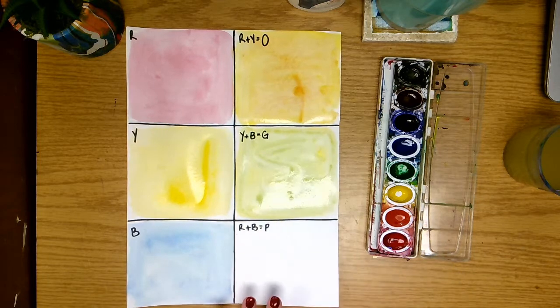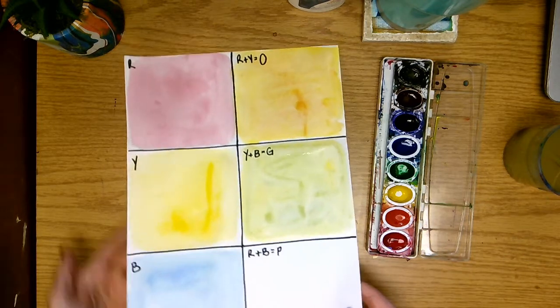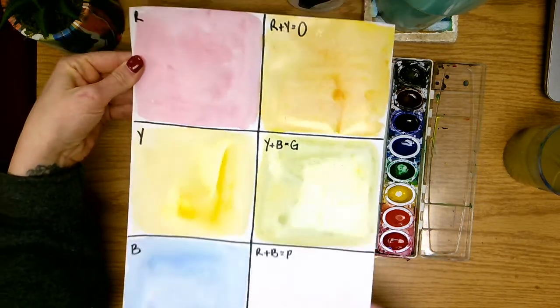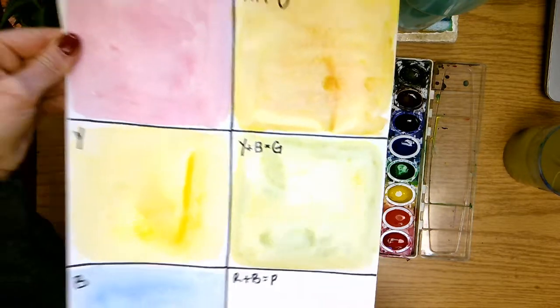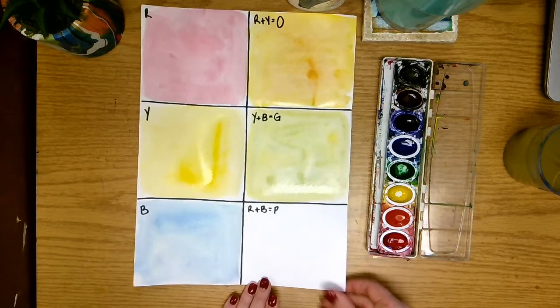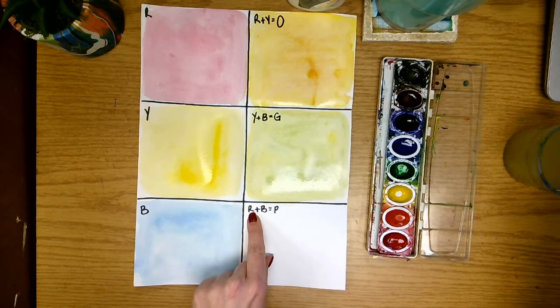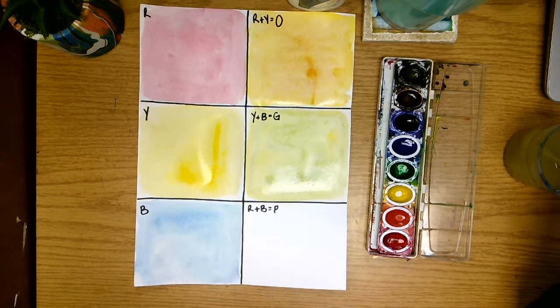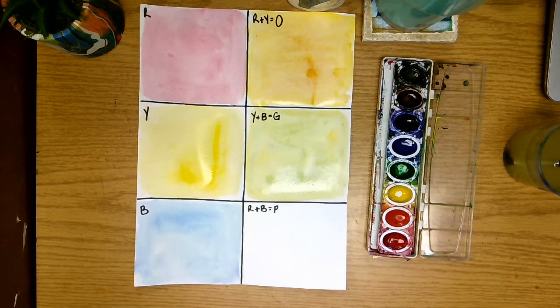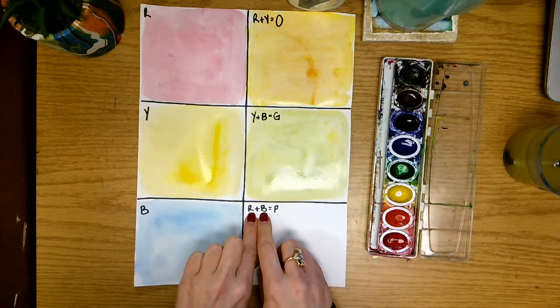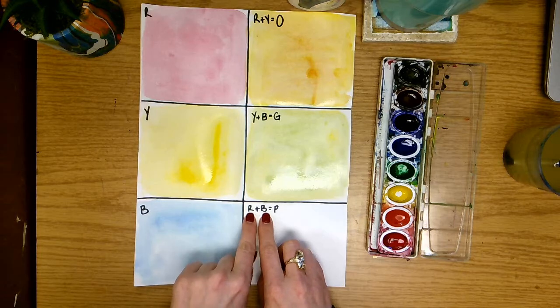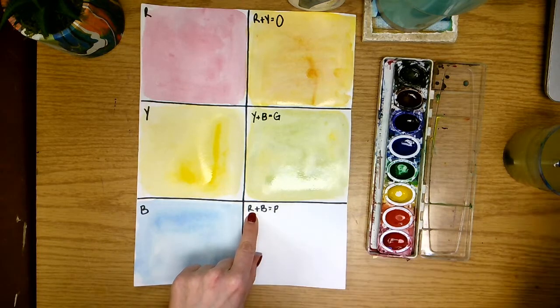So once we have our green square mixed up, I'm trying to hold it so that maybe you can see the color better but it's not wanting to show it very well. Our next one we're using red and blue. And so which one of those is going to be our darker? That one's a little bit harder. For red and blue we're going to actually start with our red and then add a little bit of blue.